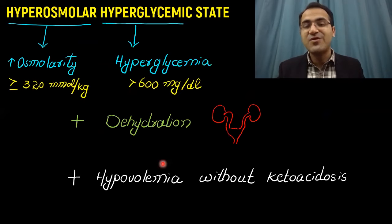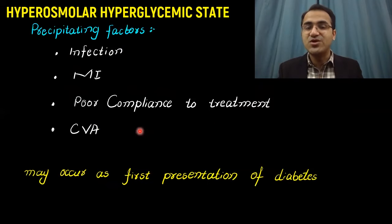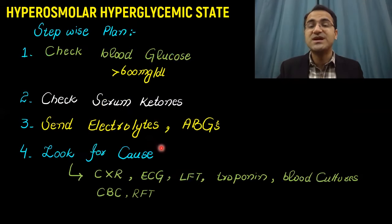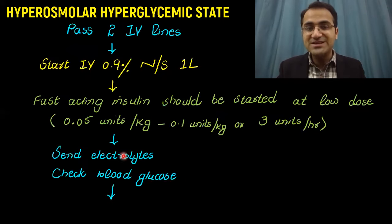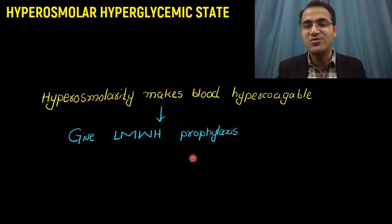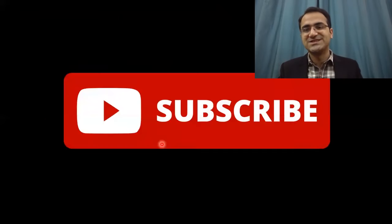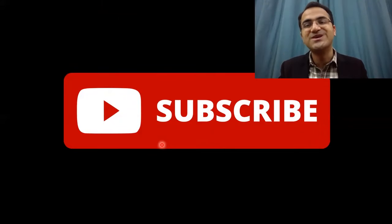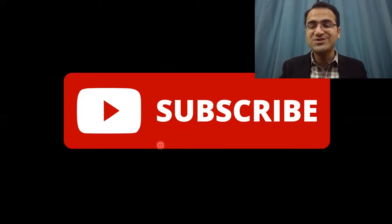In summary, we talked about what is HHS, the difference between HHS and DKA, precipitating factors, clinical presentation, and the stepwise management plan — calculating serum osmolarity, passing two IV lines, giving fluids, giving insulin, potassium replacement, blood glucose replacement with dextrose, heparin administration, and resolution criteria. Please click subscribe and check out the other videos on diabetes treatment step-by-step and emergency medicine playlist. Thank you very much.